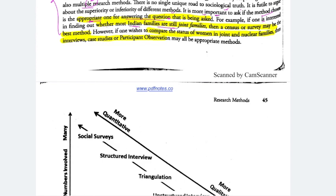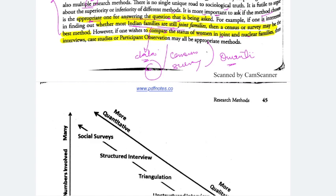For example, if you are interested in finding how many Indian families are still joint families, you need data, so a census method or survey method — which is a quantitative method — will be appropriate. But if you want to compare the status of women in joint families and nuclear families, then interviews, case studies, participation, and observation will be the appropriate methods, because you want to analyze a different angle. So for the first question it is quantitative, and for the second it is qualitative.